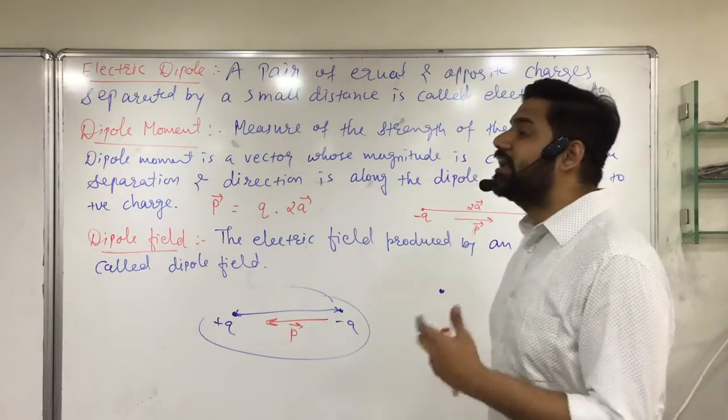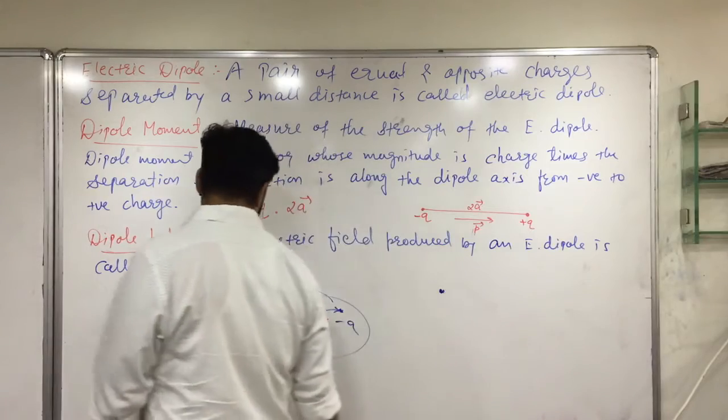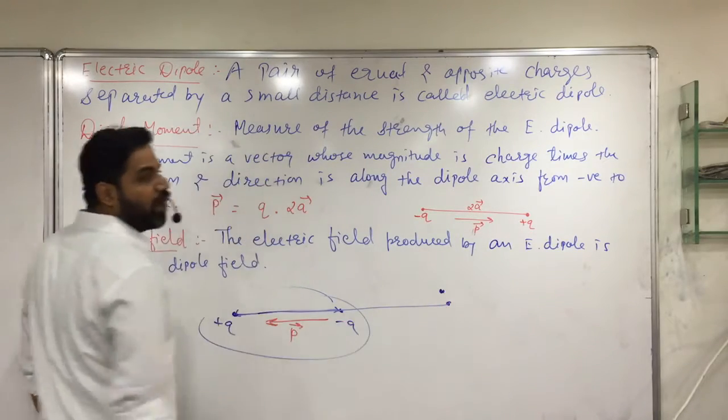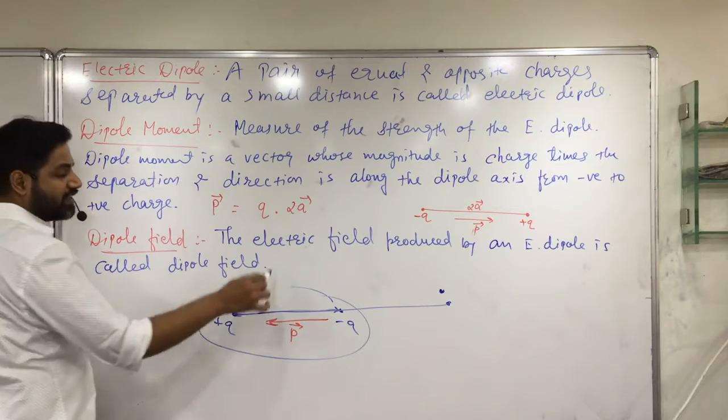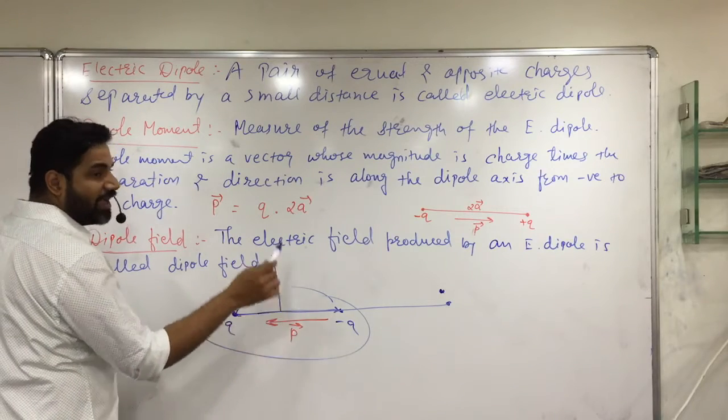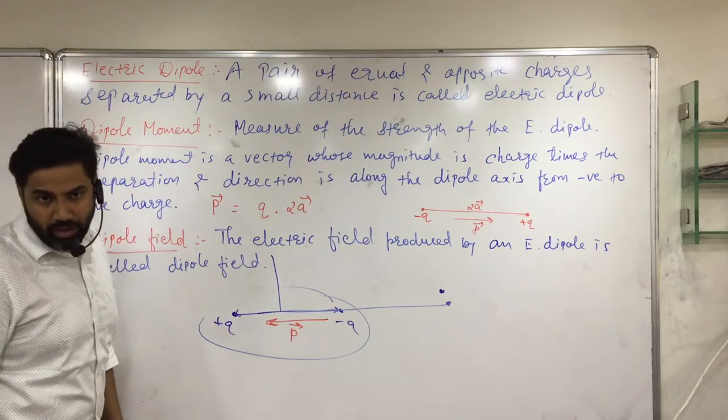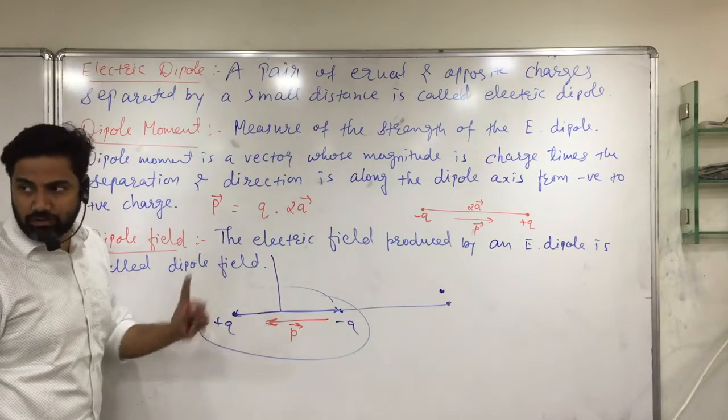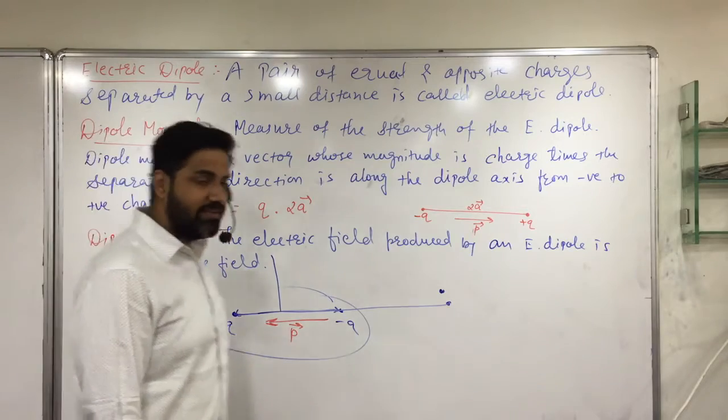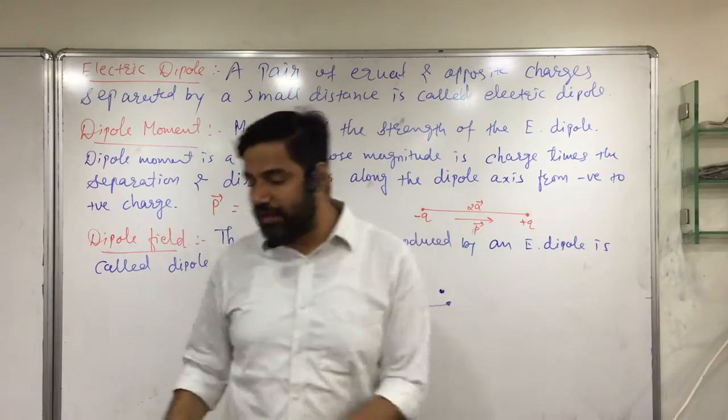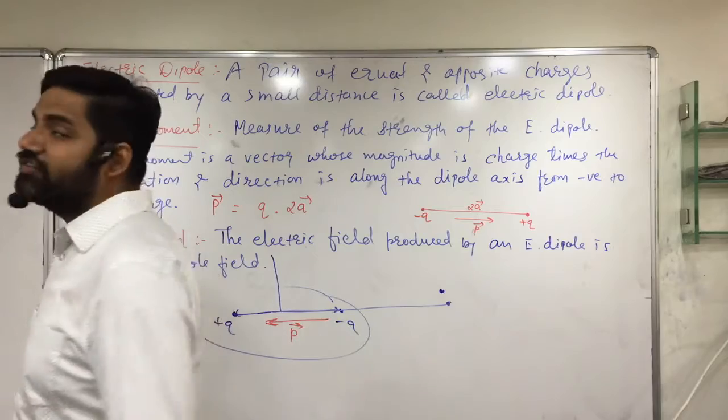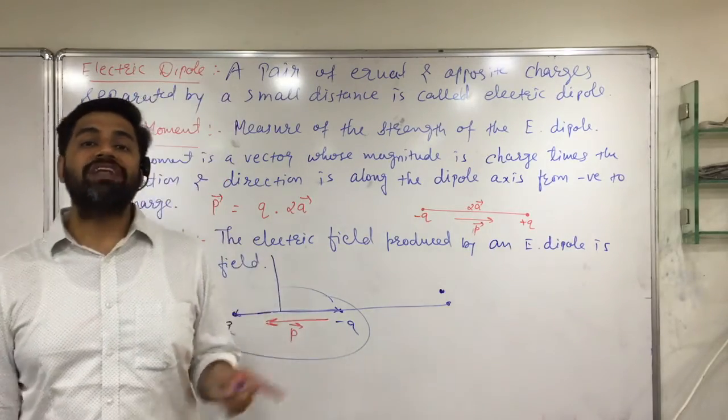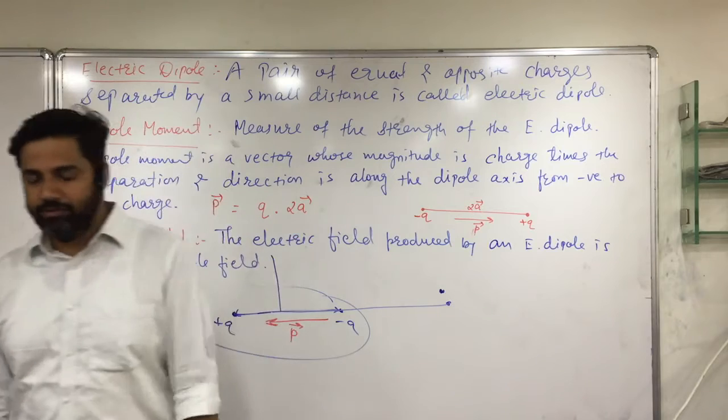We are going to study two types of things here. On the axis of the dipole, what will be the electric field? And what will be the electric field perpendicular to it on the equator? That is also what we have to calculate. So let's deal with the first thing, which is electric field due to a dipole on its own axis.